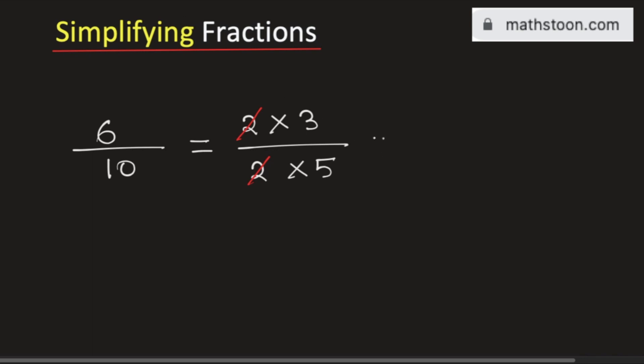So, we are left with 3 in the numerator and 5 in the denominator. As there is no common factor of 3 and 5, this fraction is the simplified form of 6 divided by 10. And this is our final answer. Thank you for watching.